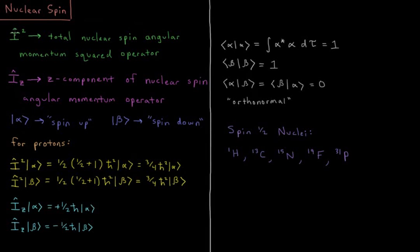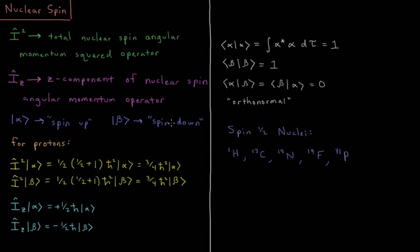And then we also have the z component of that operator. So Iz is the z component of the nuclear spin angular momentum operator. In this case, just like for electrons, we can have the case where it is spin up alpha, or spin down beta.